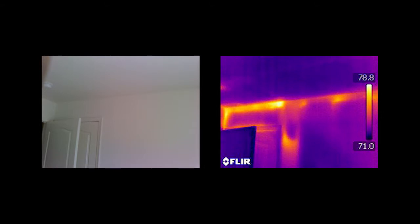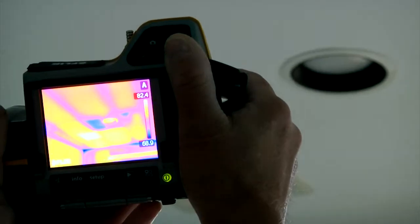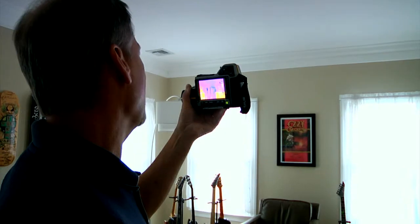Air leakage is another major problem infrared imaging can detect. This occurs when outside air enters a house through cracks and openings.